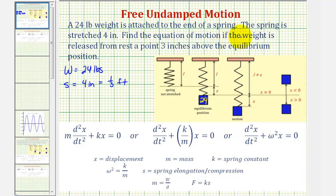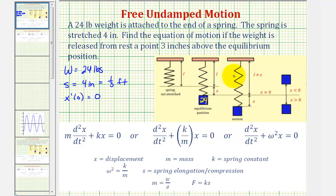We want to find the equation of motion if the weight is released from rest at a point three inches above the equilibrium position. Because it says the weight is released from rest, that means the initial velocity would be zero, so x prime of zero equals zero. The weight is released three inches above the equilibrium position, so going back to our diagram, the weight would be released above, maybe somewhere in here. This length here would be three inches.